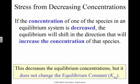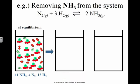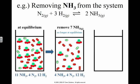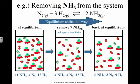If I decrease the concentration, it's going to shift to the side to try and produce more of it. With the Haber process at equilibrium, if I remove some ammonia, the reaction is going to shift towards the right to try and produce more ammonia to get back to equilibrium. That means I'm going to decrease the amount of nitrogen and hydrogen and increase the amount of ammonia.